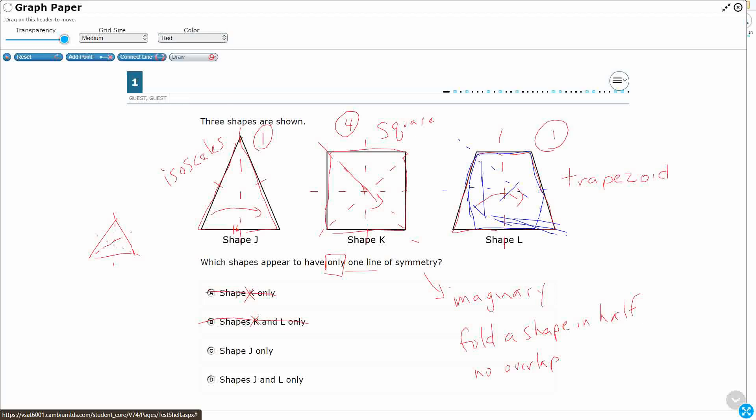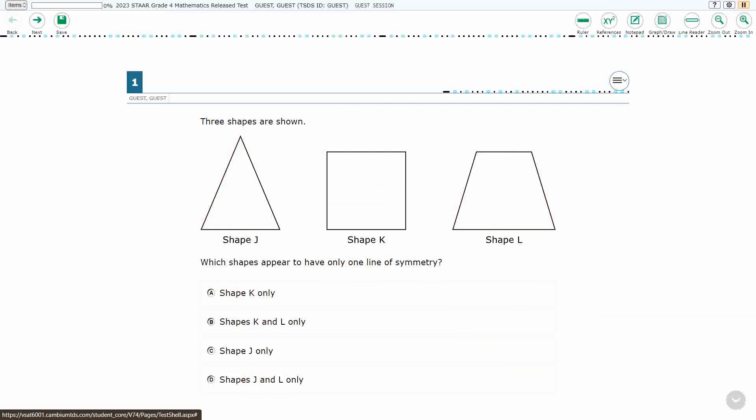Okay. So we need to say both J and L. Obviously we've got C and D, but it is going to be both J and L. They have only, not at least, but only one line of symmetry. So our answer here is D, shapes J and L only.